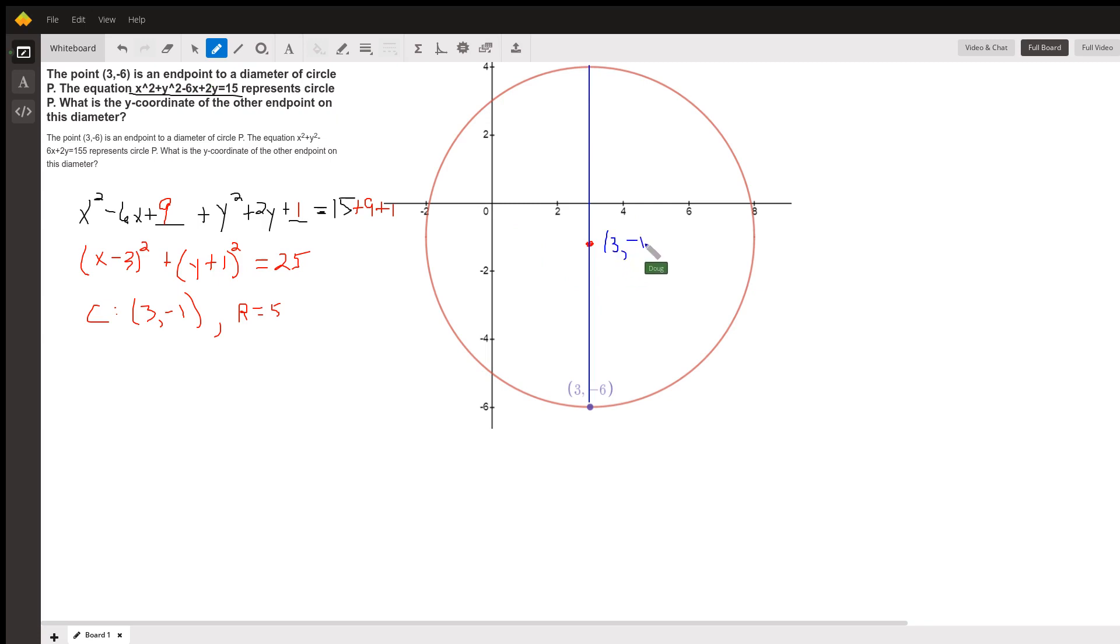Now if this wasn't a vertical line, we'd have to use the midpoint formula. I could say that the coordinates of this point are x sub 1, comma y sub 1.